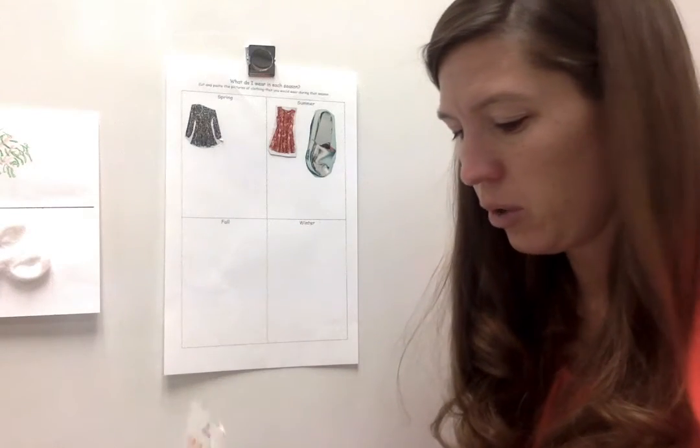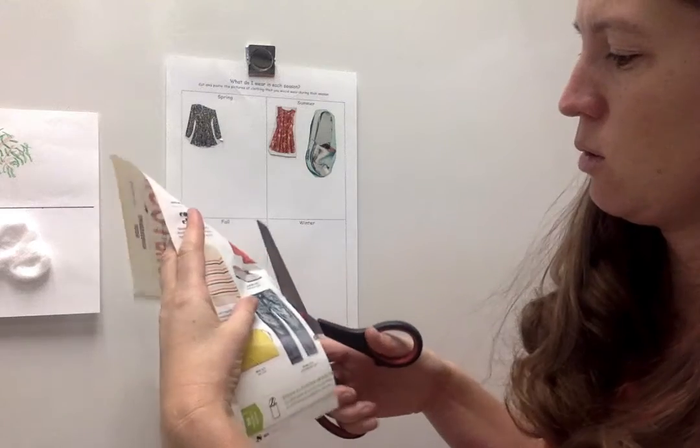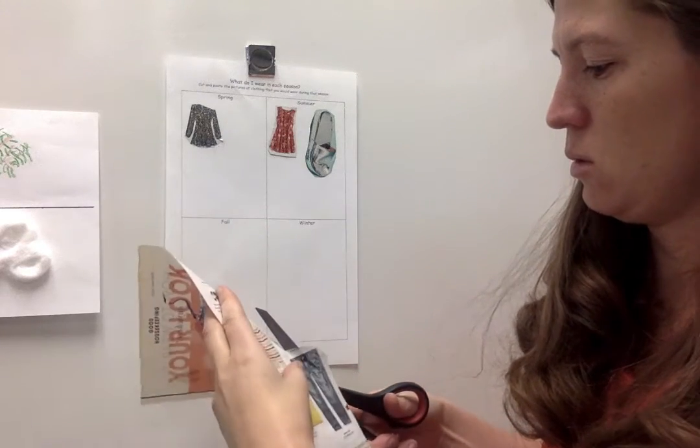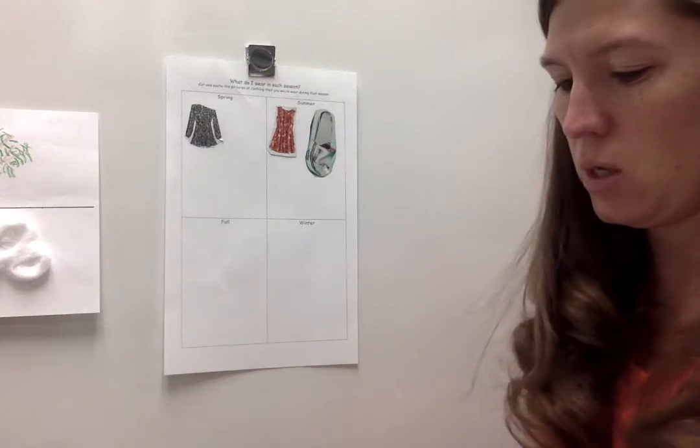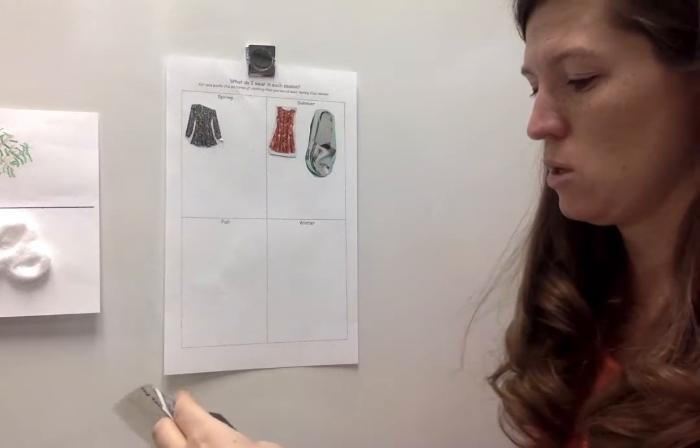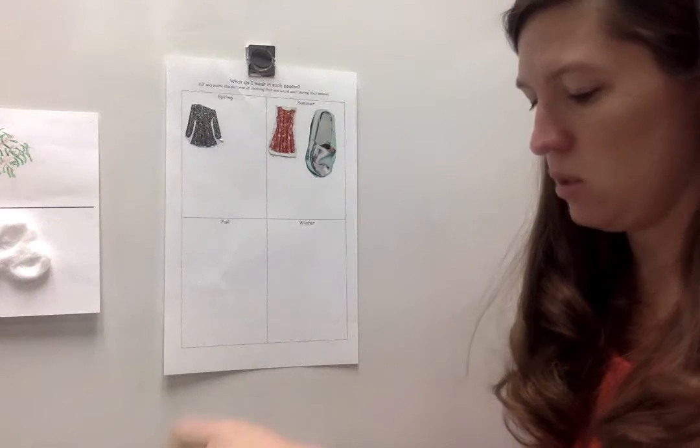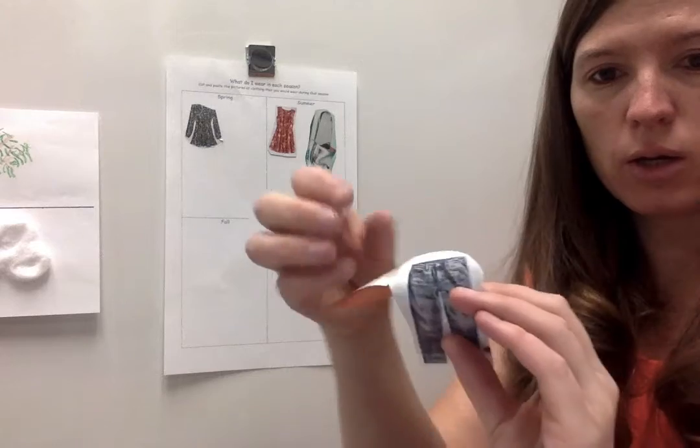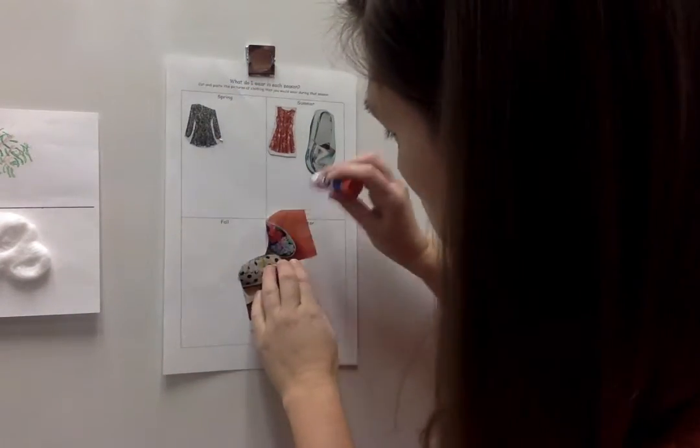Now this is a perfect fall outfit right here. So a sweater, jeans... I don't need to wear the purse, so I'm going to cut the purse out. That doesn't seem like I need that, but some jeans and a sweater for the fall. So I'll put a little smudge here and glue that on.